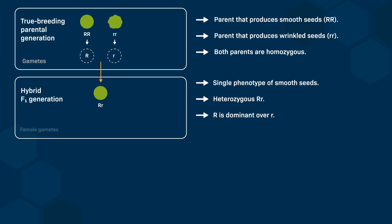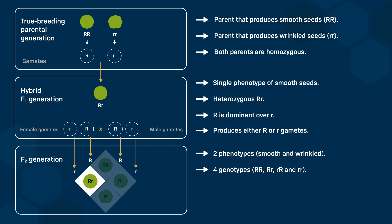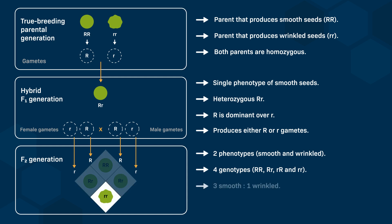These F1 plants were capable of producing two types of gametes: one containing the uppercase R allele and the other containing the lowercase r allele. Mendel produced a second filial generation, denoted as F2, by cross-pollinating plants from the F1 generation. He consistently found two phenotypes — smooth and wrinkled — in a ratio close to three smooth peas for one wrinkled pea. This ratio can be explained by the production of four possible combinations of alleles: uppercase R and uppercase R; uppercase R and lowercase r; lowercase r and uppercase R (both referred to as heterozygous Rr); and lowercase r and lowercase r.